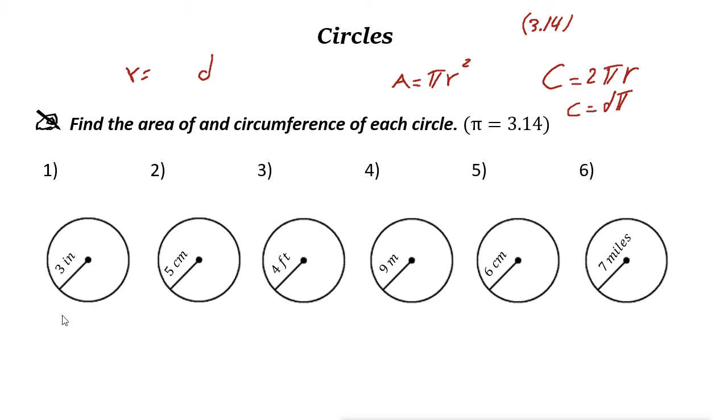So the first one is 3 inches radius. If you want to find the area, it is pi R squared. 3 squared is 9, so it is 9 pi. You can use a calculator and multiply that by 3.14, and the answer is 28.26 square inches.